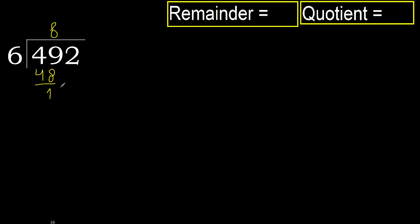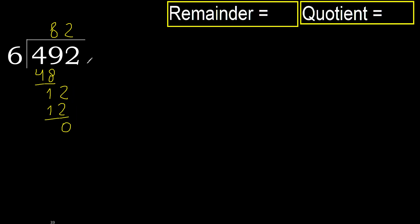Next, bring down 12. 6 multiply by 2 is 12, ok, is not greater. Subtract.